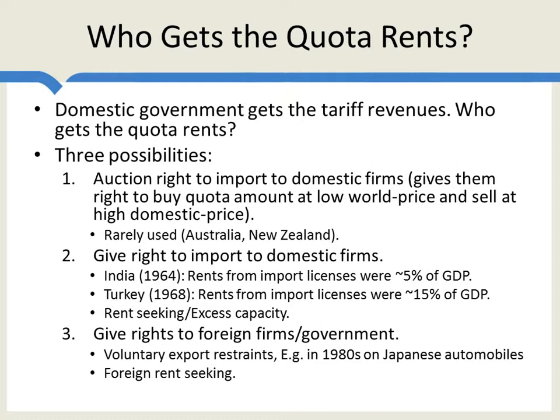How is the quota divided in the foreign country? It's the foreign government or firms which must agree how to split up the right to import into the domestic economy — into, say, the United States. This can create foreign rent-seeking. Large Japanese automakers worried about upstart competitors may actually want a quota because it cements their position, making it harder for other Japanese firms to enter the U.S. market since they've already grabbed up that quota.